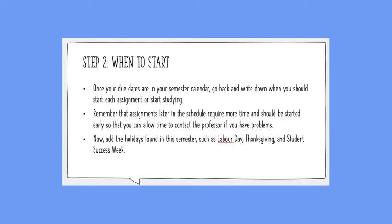Also add the holidays found in your semester. For the fall semester those include Labor Day, Thanksgiving, and Student Success Week. For the winter semester: Family Day, Student Success Week, and Good Friday. For the summer semester: July 1st and the Civic Holiday Weekend in August. Make sure you have those so you don't wind up going to class when you don't need to. Once you have all this information, add more details — family birthdays, religious observances, chats with family back home, sporting events, outings with friends. Add these in a unique color or code, since they require a larger time commitment, so you can balance school and personal life.